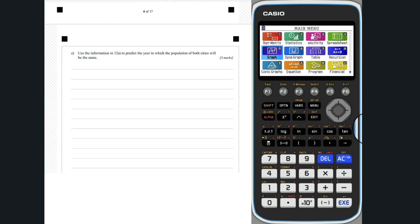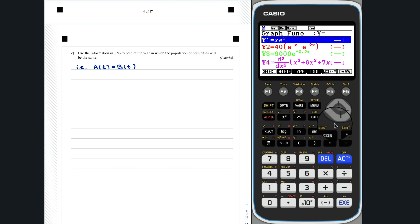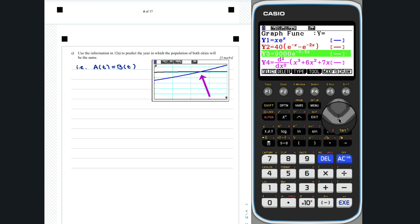Question 12c. We want to predict the year that the population of a and b are the same, i.e. when a of t is equal to b of t. This can be done by finding the intersection of the graphs of a of t and b of t.